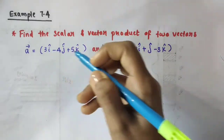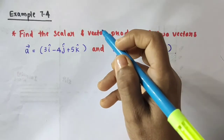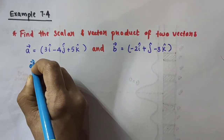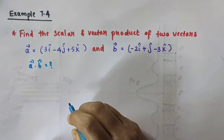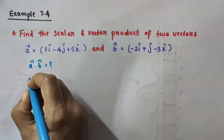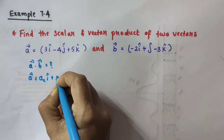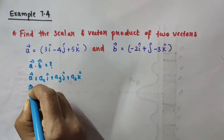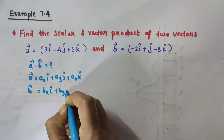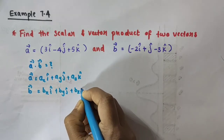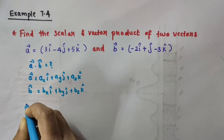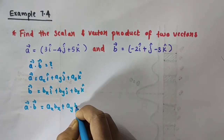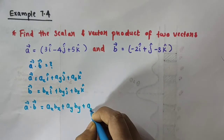We are given two vectors, vector A and vector B, and we are asked to find out the scalar product as well as the vector product. First, let us find out the scalar product. Scalar product means we want to find vector A dot vector B. In general, if vector A equals Ax·i-cap plus Ay·j-cap plus Az·k-cap, and vector B equals Bx·i-cap plus By·j-cap plus Bz·k-cap, then the dot product vector A dot vector B equals Ax·Bx plus Ay·By plus Az·Bz.